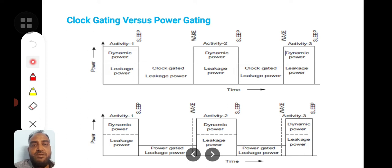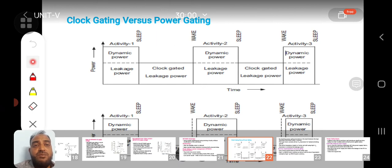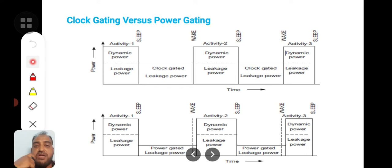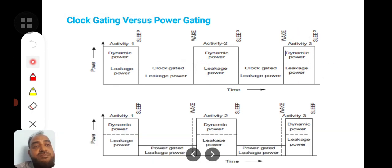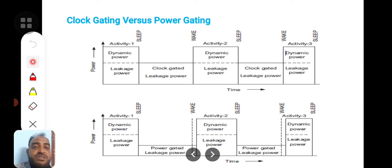Leakage power is a continuous power whereas dynamic power comes because of the clock activity. This circuit has a good amount of leakage current throughout, which cannot be avoided by gating the clock. In three continuous activities, the same kind of power dissipation is taking place. Now, observe the second diagram — in this diagram you can see the power axis and the time axis.